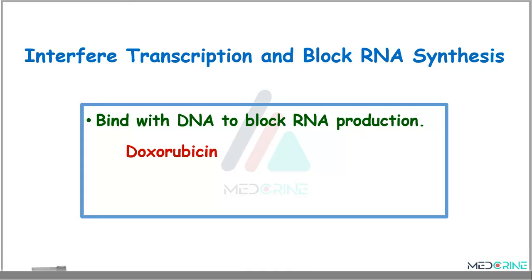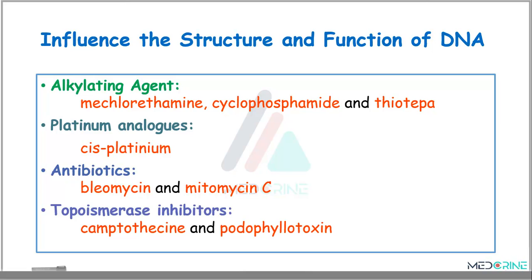Drugs which work by interfering with transcription and blocking RNA synthesis include, for example, doxorubicin. Other drugs work by influencing the structure and function of the DNA — an example is alkylating agents such as mechlorethamine, cyclophosphamide, and thiotepa. We also have platinum analogues, which work by influencing the structure and function of the DNA; an example is cisplatin. Antibiotics like bleomycin and mitomycin C can also work by influencing DNA structure. And lastly, we have topoisomerase inhibitors like camptothecin and podophyllotoxins.